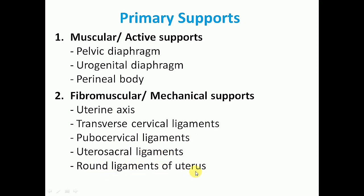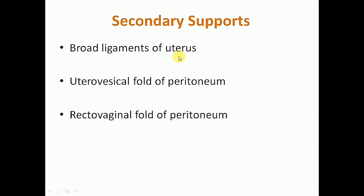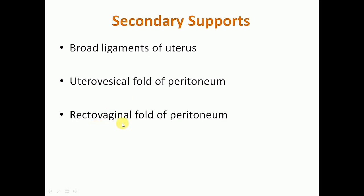The secondary supports are actually not the true supports; they are merely peritoneal folds and ligaments and include broad ligaments of uterus, utero-vesicle fold of peritoneum and recto-vaginal folds of peritoneum.